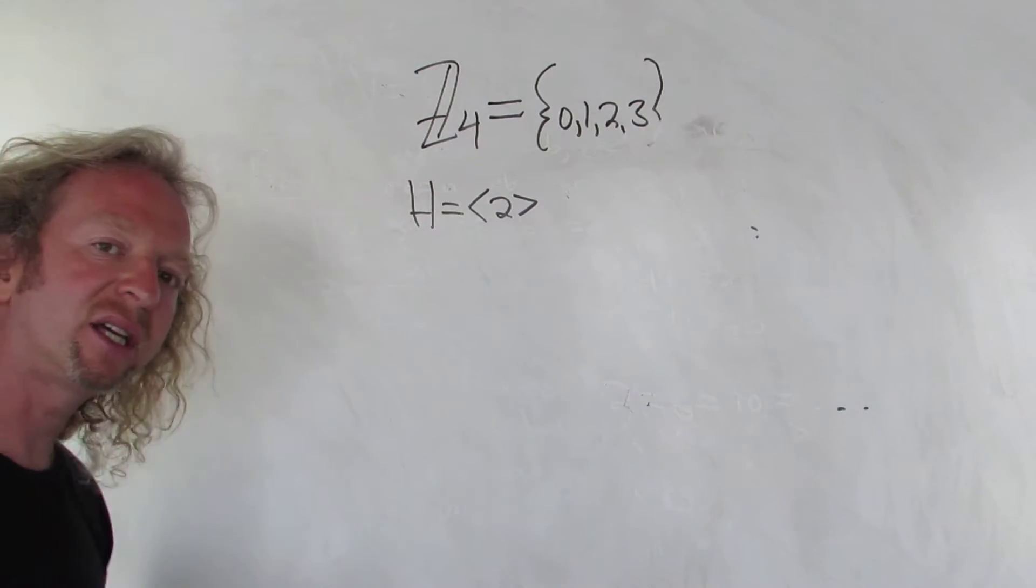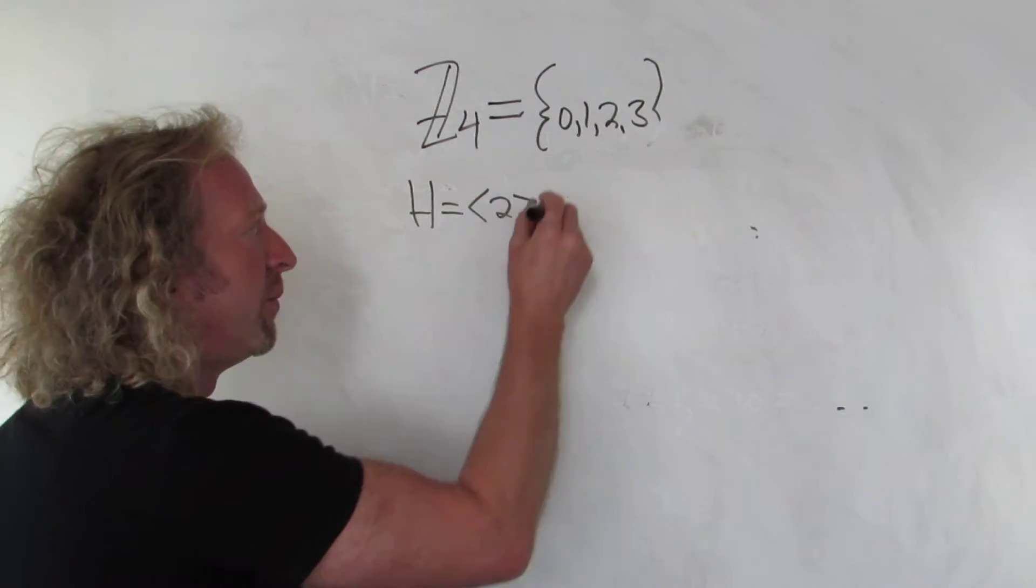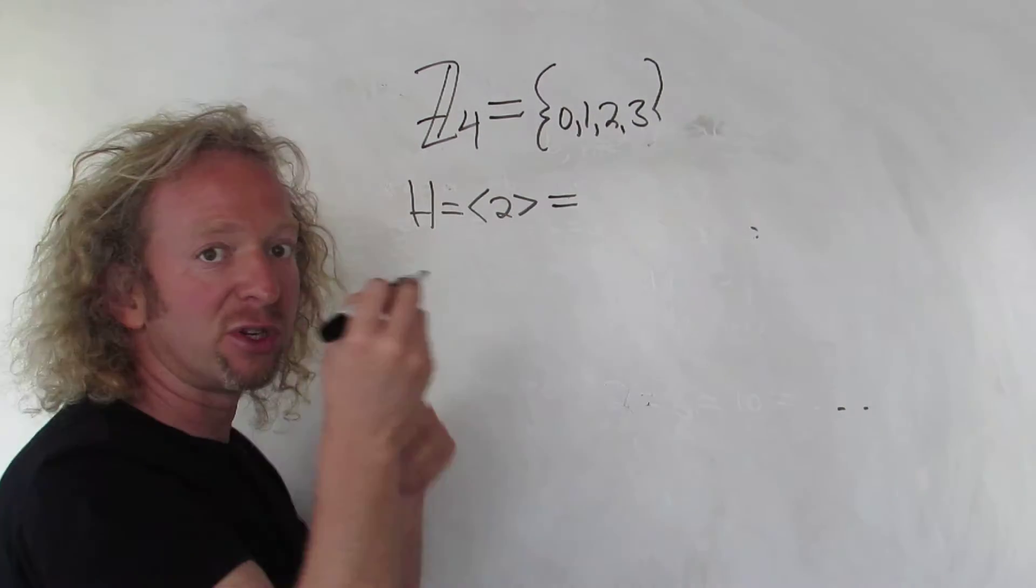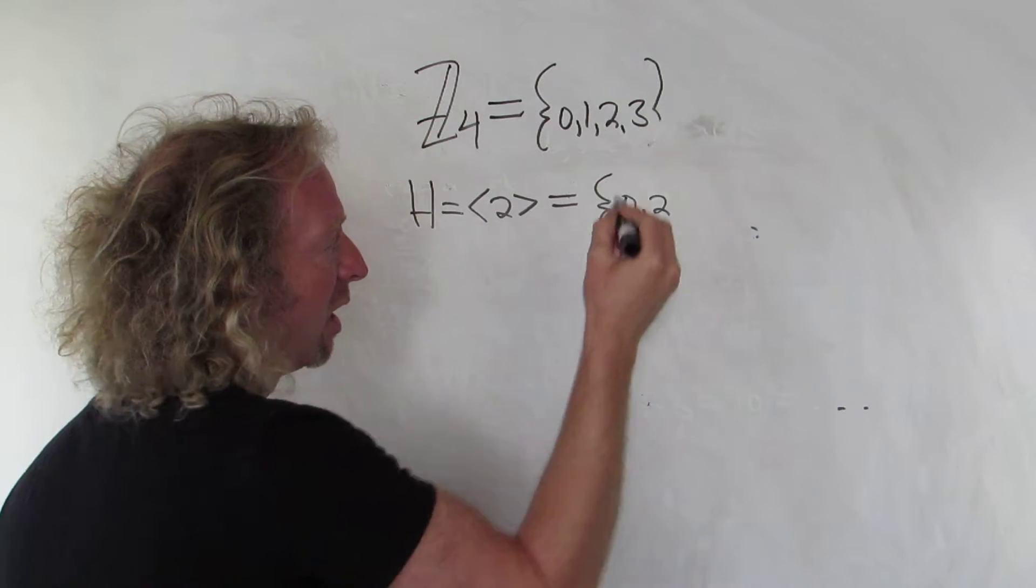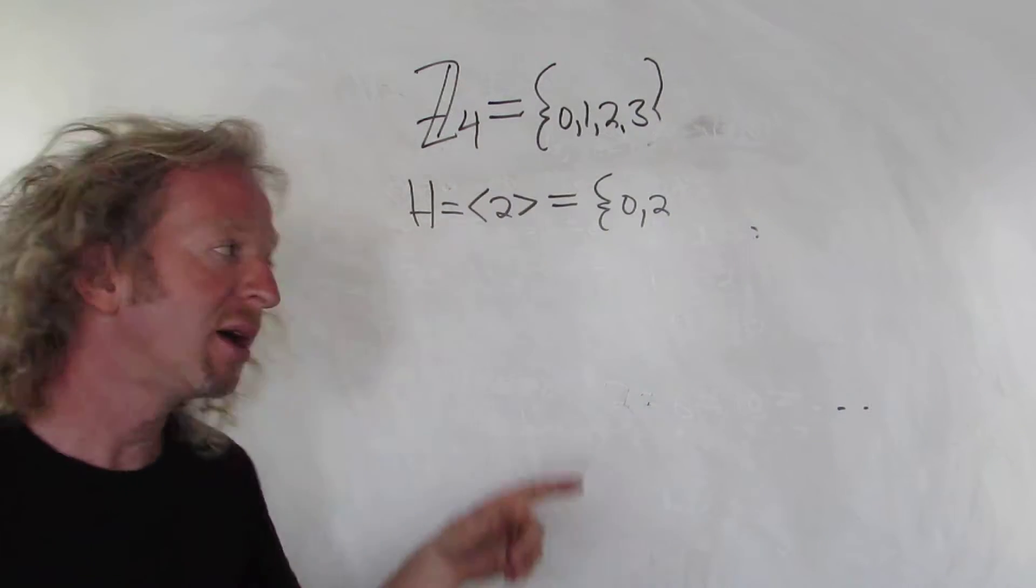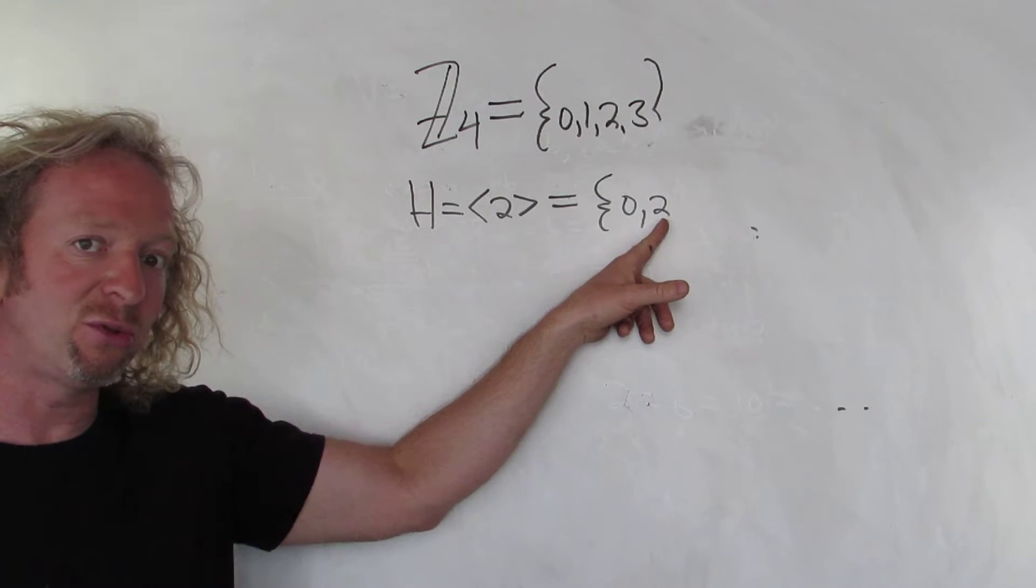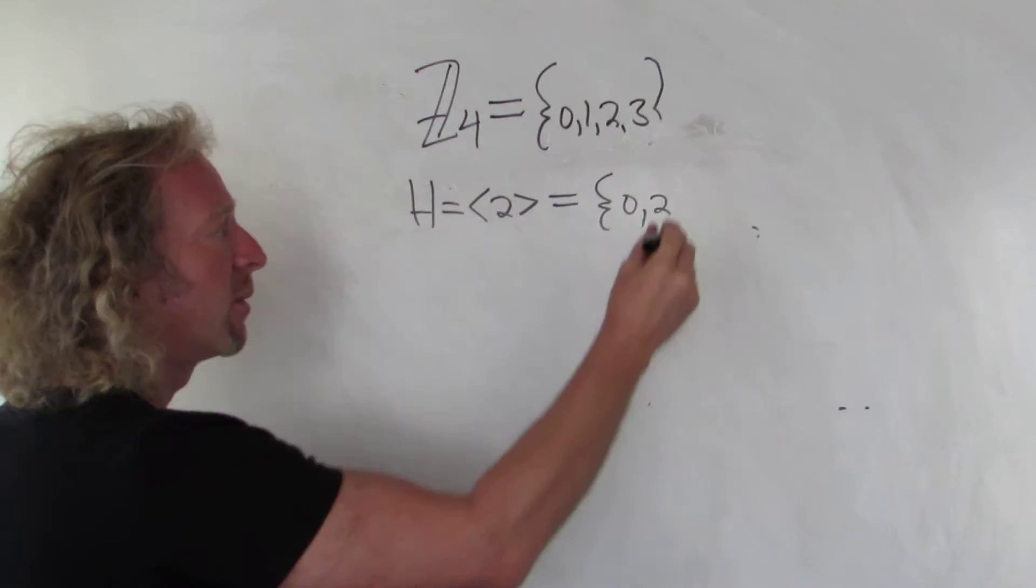H here is called a cyclic group, it's a cyclic subgroup, it's all the powers of 2. So in this case, 2 plus 2 is 4, which is 0, so 0 is in this group, and then 2 is in the group. 4 is there, but 4 is 0. 6 is in this group, but remember 6 is equal to 2 modulo 4, because 4 goes into 6 one time, the remainder is 2.